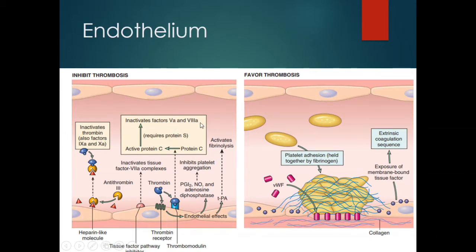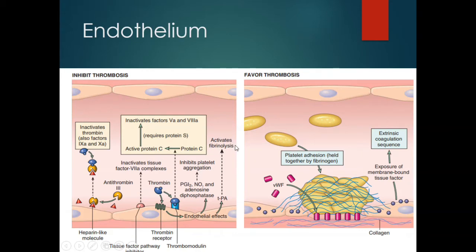There are also prostacyclins and other molecules flowing in normal blood — prostacyclin (PGI2), nitric oxide, and adenosine diphosphate (ADP) — that inhibit platelet aggregation. Furthermore, widespread activation of tissue plasminogen activator activates plasmin, a proteolytic enzyme that cleaves fibrin threads and inactivates coagulation and clot formation by activating fibrinolysis. These constitute the antithrombotic mechanisms.